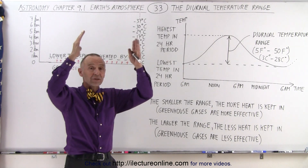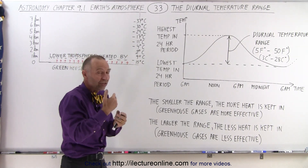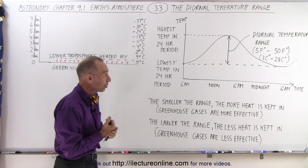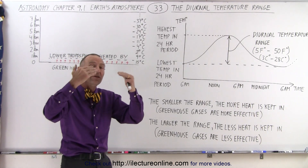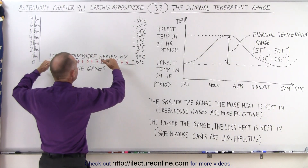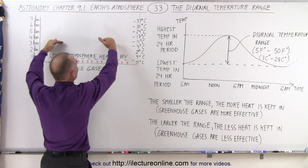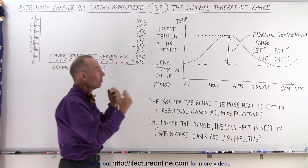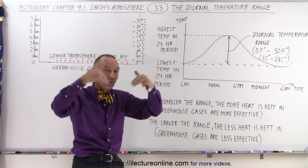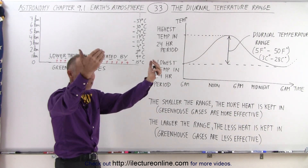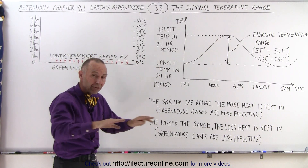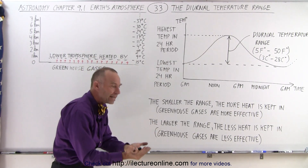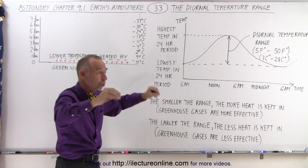Even though the sun is at its highest point around noon, the sun is still adding a lot more energy even in the hours after noon — 1 o'clock, 2 o'clock, 3 o'clock in the afternoon — and so more heat is being added compared to the amount of heat that's leaking away from the lower troposphere into the higher regions of the troposphere. The heat is received from the sun, it is absorbed by the surface, and that 5.5% that gets re-radiated into the lower troposphere is what the greenhouse gases absorb.